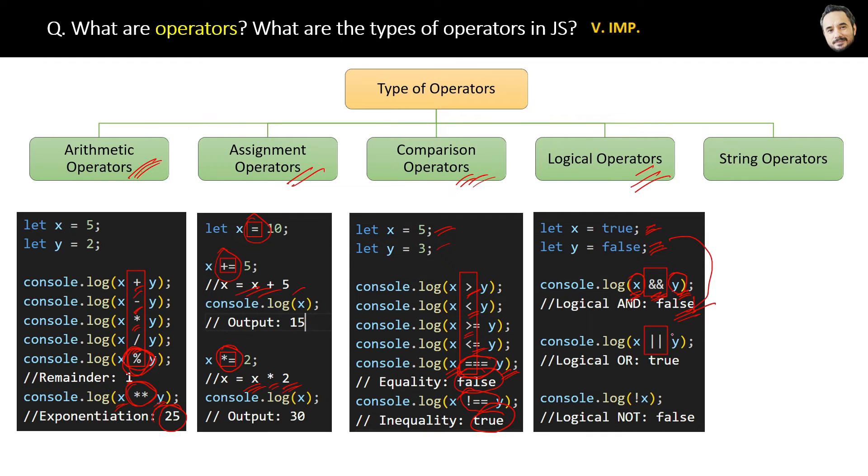Similarly, the second logical operator is the OR operator. It will also check the left and the right condition, and here if any one of them is true, it will return true. Or we can say if both are false, then only it will give false as a result. In this case, x is true, y is false - output will be true because at least one is true. After this, the last logical operator is NOT operator. Here, if x is true it will return just the opposite - false. And if x is false, then it will return true. So these were some logical operators.